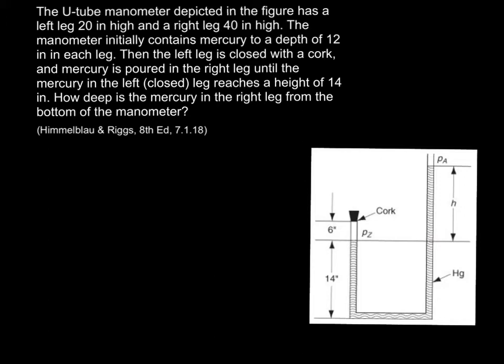The textbook problem gives a U-tube manometer and it gives this figure which pictures a final condition. The problem statement however states an initial condition where mercury is in this manometer to a depth of 12 inches in each leg. So I'm going to draw this initial condition in addition to the sketch that they've given us.